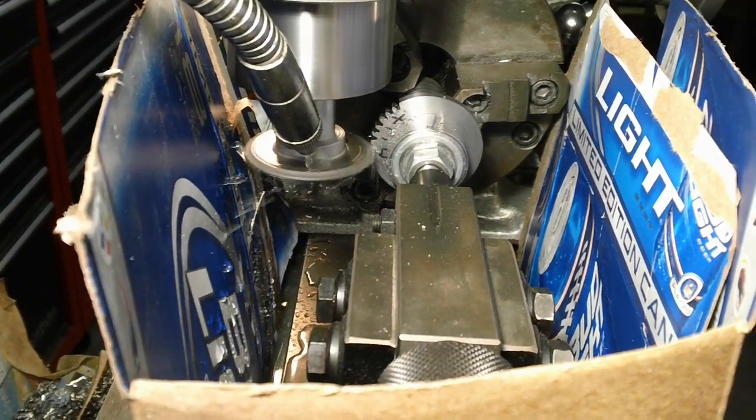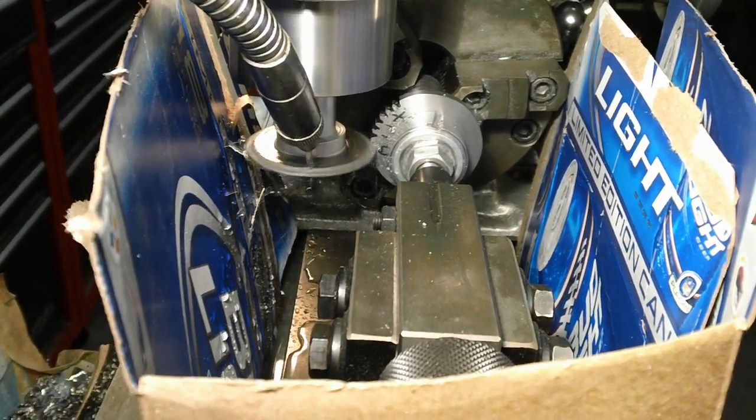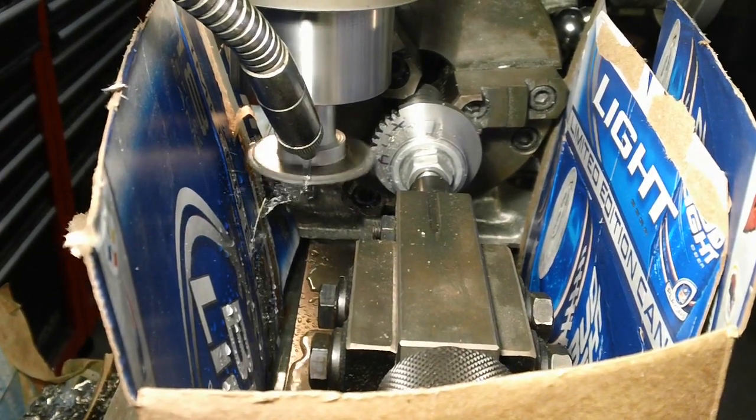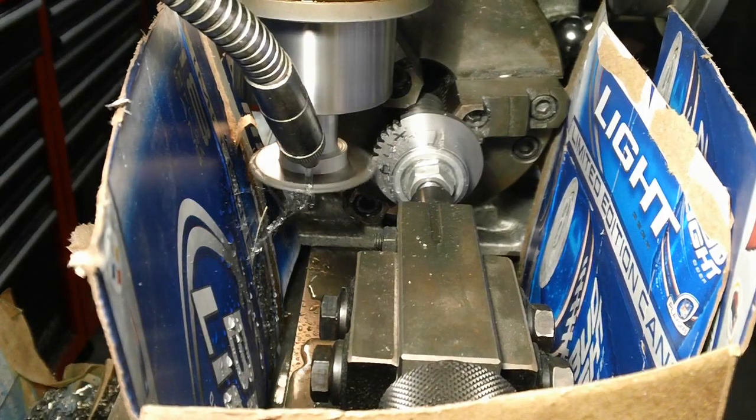The crankshaft is suspended in the block in beer can aluminum front housing by ball bearings, with a 2 inch gear made from 1045 hot rolled steel between them. This gear turns the camshaft.